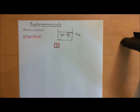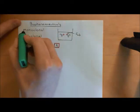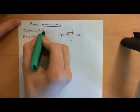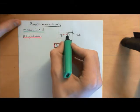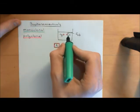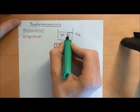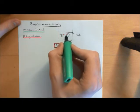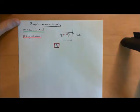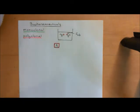A monoclonal preparation of antibodies, on the other hand, refers to a mixture of antibody molecules against protein A where they all have identical antigen-binding portions. They are all made by the same B-cell clone, and they all bind to a specific epitope of protein A. That's the difference between polyclonal and monoclonal.